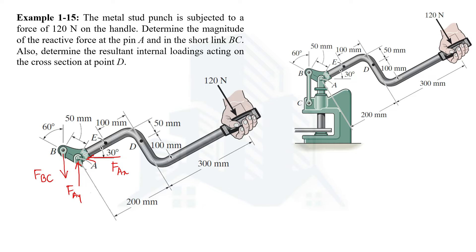To find the reaction forces we use the conditions of equilibrium. Let's use the third condition — summation of all moments at any point equal to zero — and take point A, so that FAY and FAX create no moment. Assuming clockwise moments are positive, the 120 N force generates a clockwise moment, so: positive 120 multiplied by the moment arm distance of 200 plus 300, which equals 500 mm.